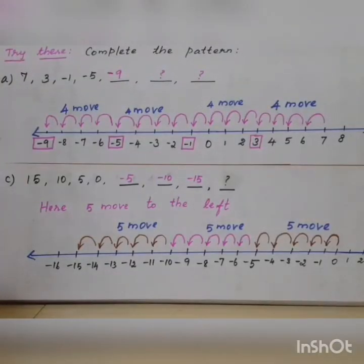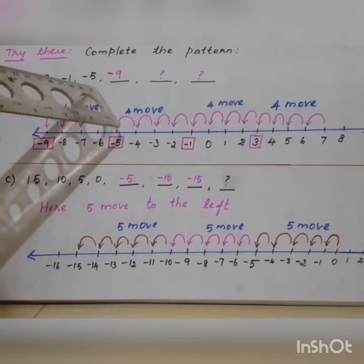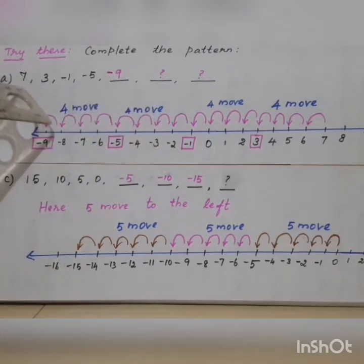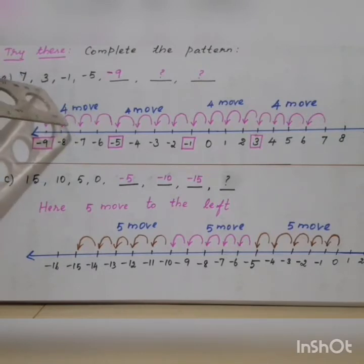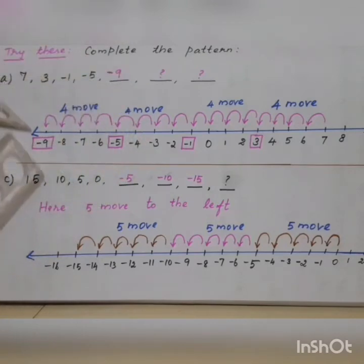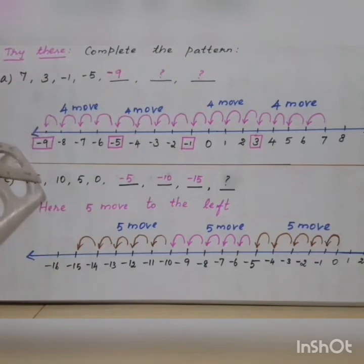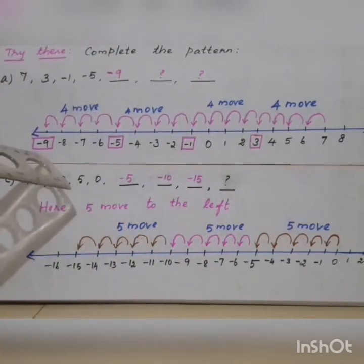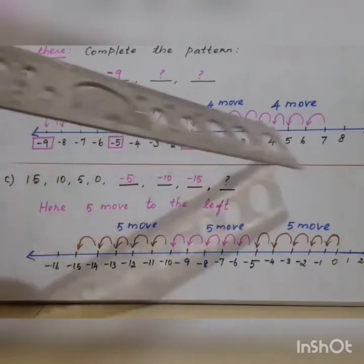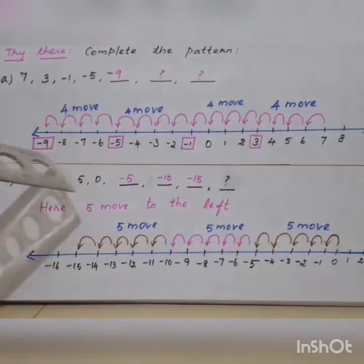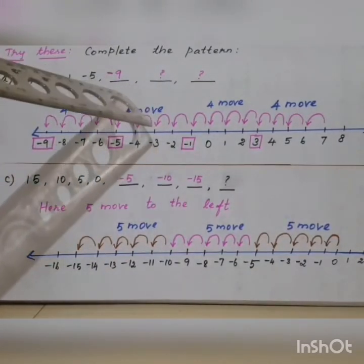OK student, try these sums. Complete the pattern. First sum: 7, 3, minus 1, minus 5 — what are the next three numbers? Listen to the first two numbers: 7 and 3. How many numbers are decreased? Four numbers. So all are decreased by four numbers. You can fill it easily. If you are not able to do that, use a number line. Place the integers on the number line. Start with 7 and end with 3, that is four moves.